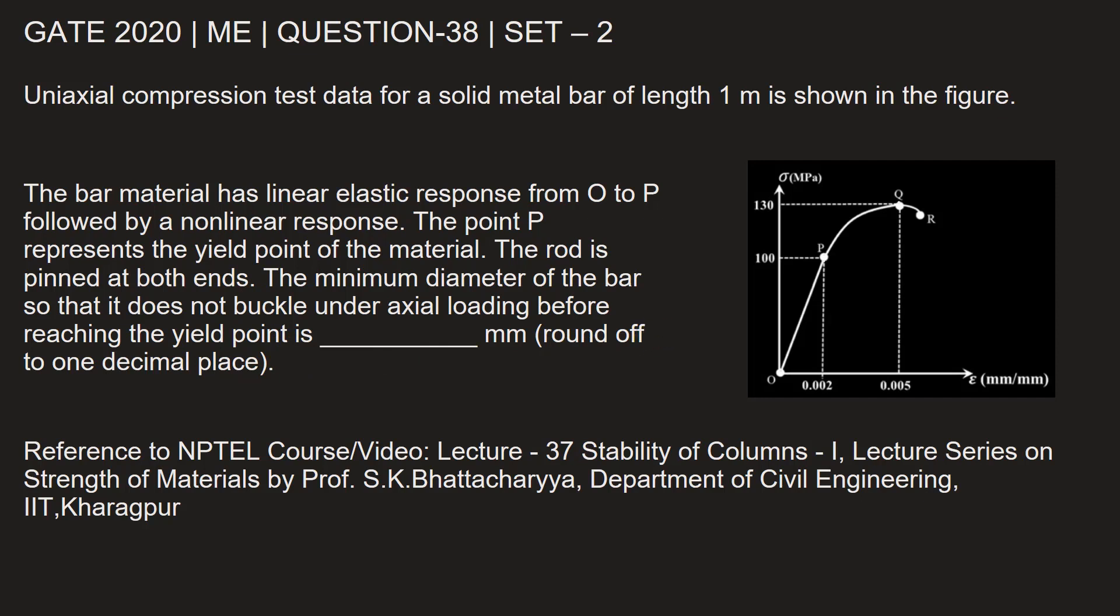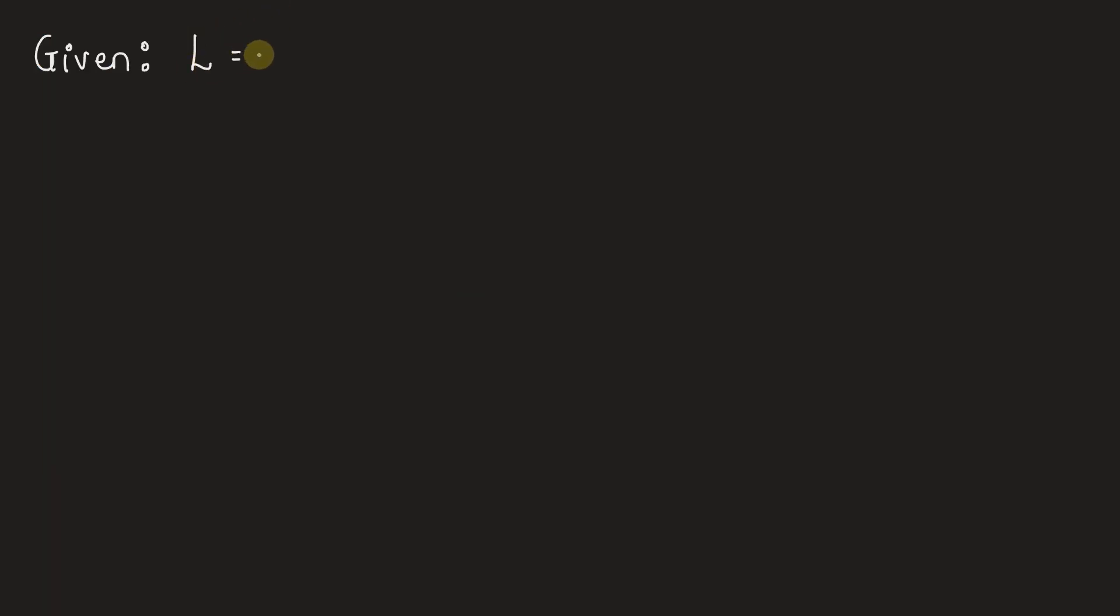Let us start with the given data. First thing that is given is length of the rod is 1 meter. From the graph we can write yield stress as 100 MPa, ultimate stress as 130 MPa.